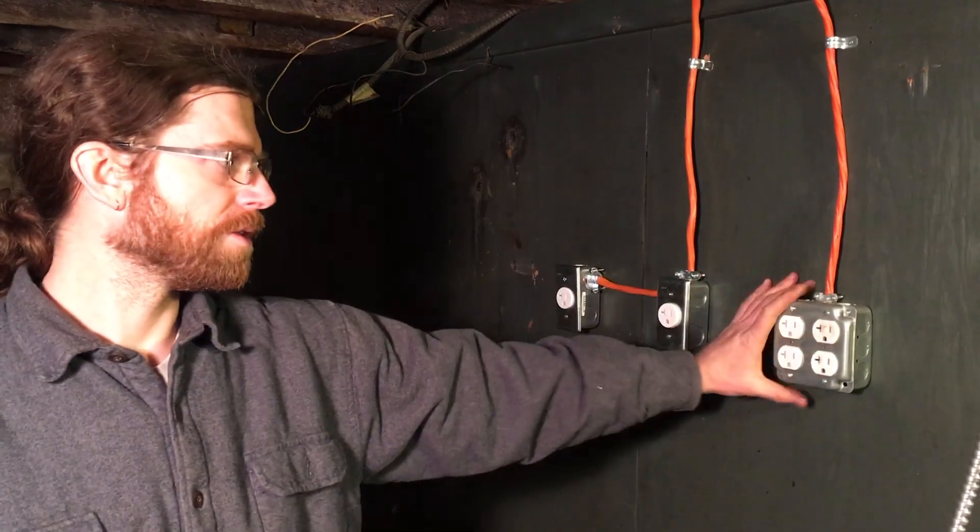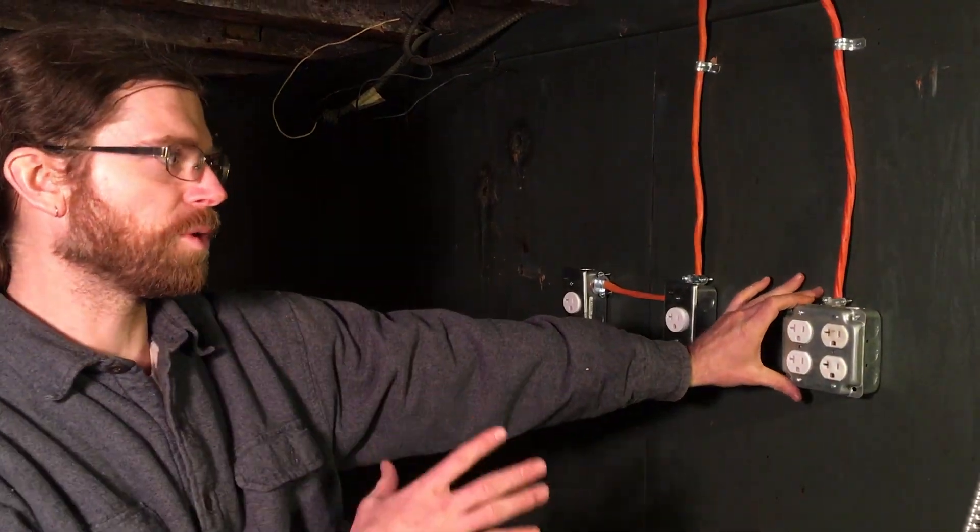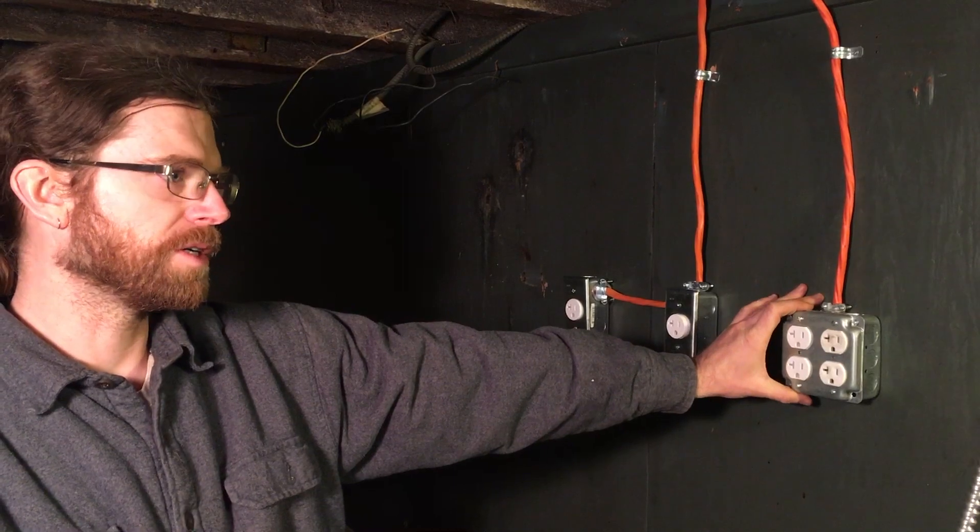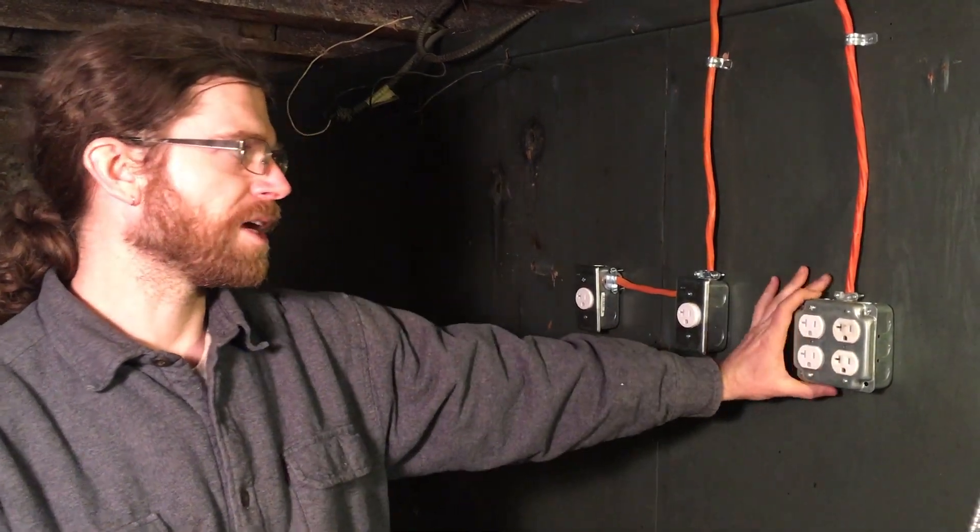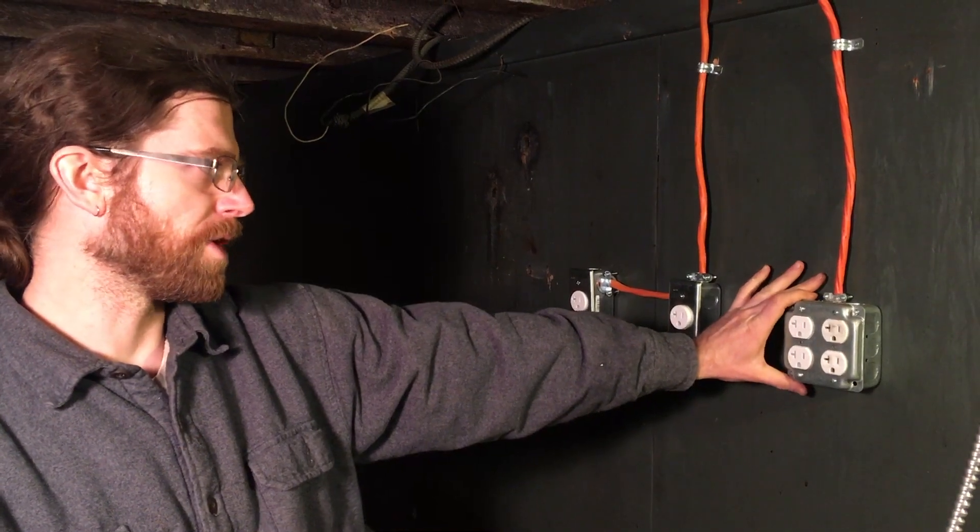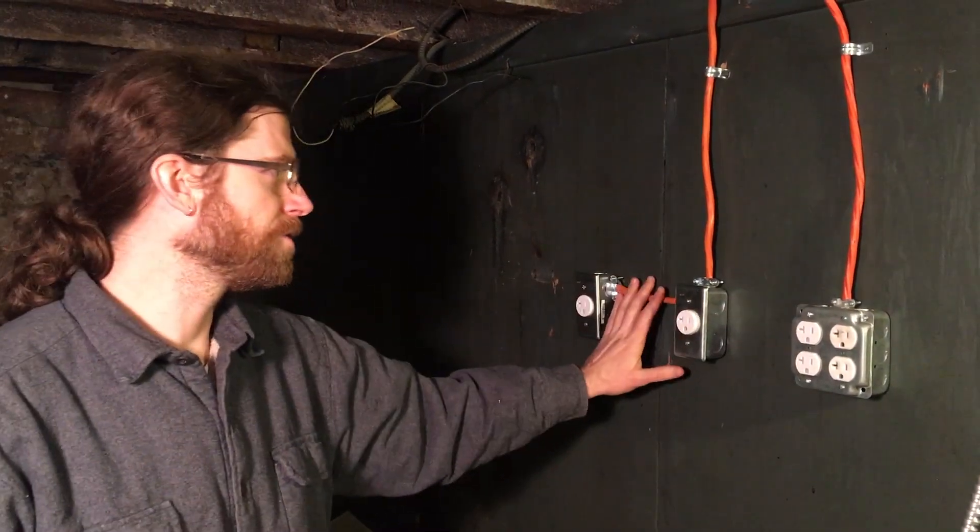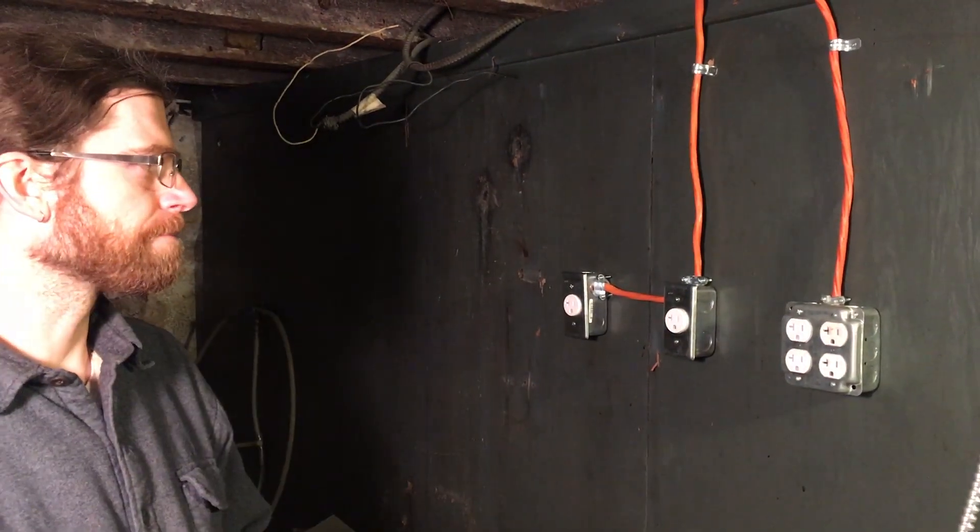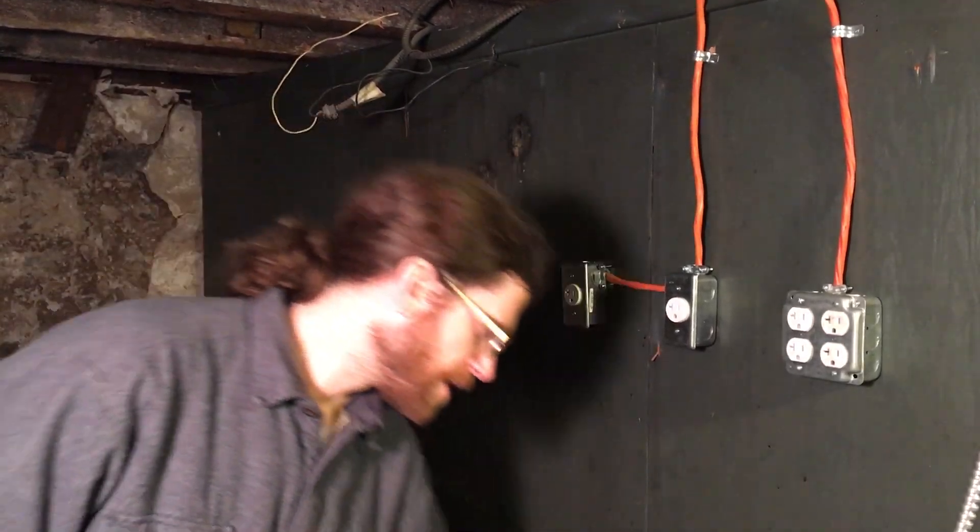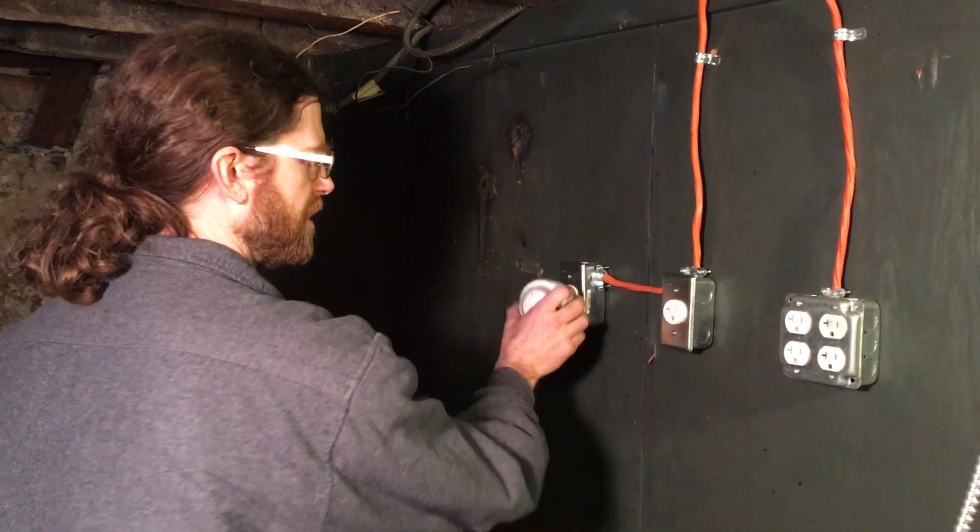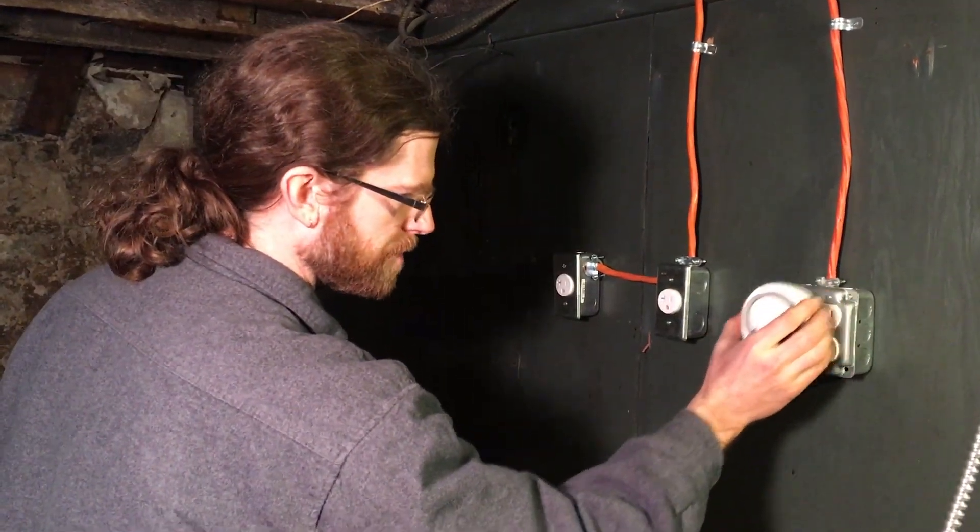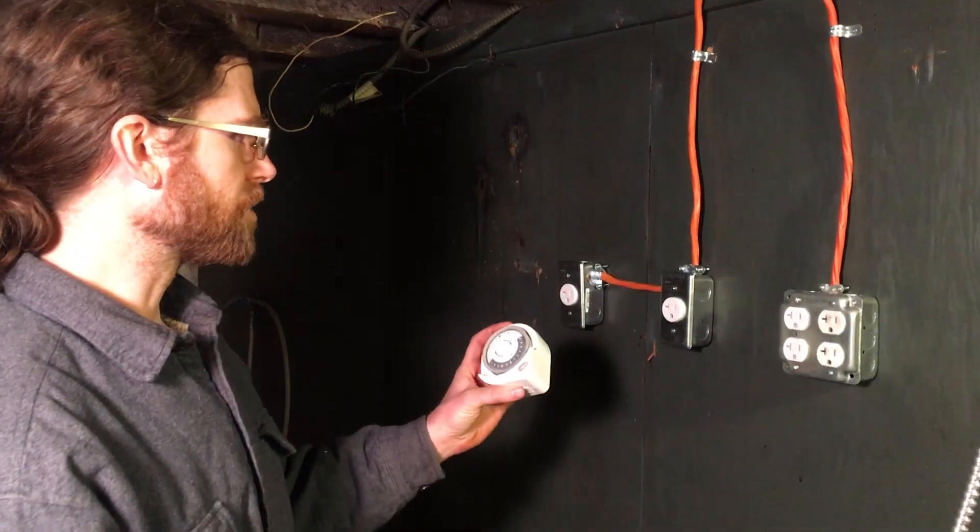I wired a 20 amp circuit in here because I wasn't sure what exactly I'd add in in the future. I put a 20 amp on its own breaker and then these two are going to be for my two ballasts. Basically, I made them single outlets so that I could put an individual timer on each. Obviously, you can't fit two timers on a single outlet.